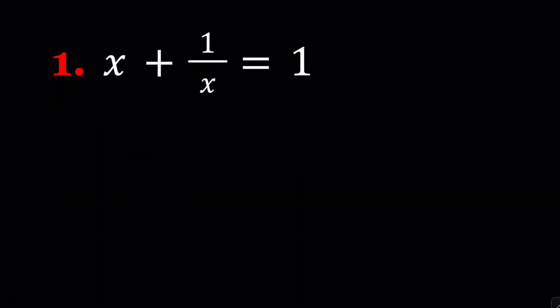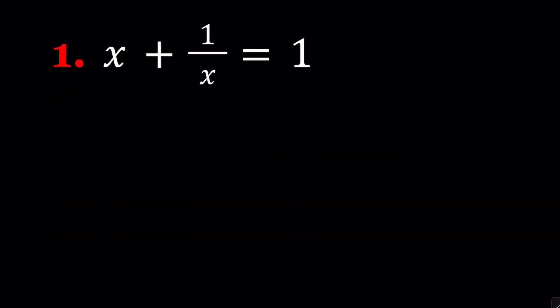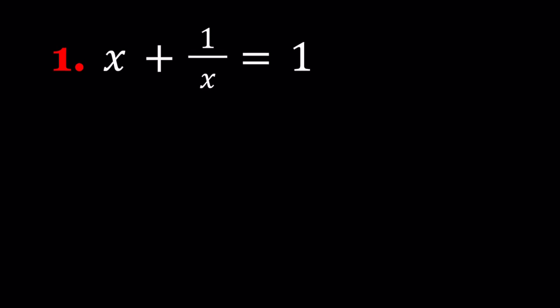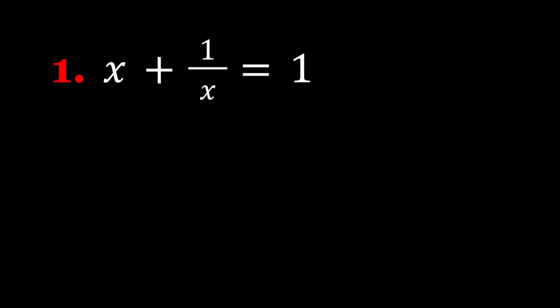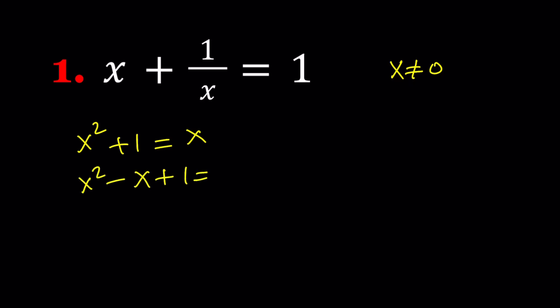First problem: we're going to be solving an equation x plus 1 over x equals 1. As you hopefully know, this can be turned into a quadratic equation. First of all, note that x is not supposed to equal 0. Under those conditions, we can multiply everything by x. That gives us x squared plus 1 equals x, and putting everything on the same side gives us x squared minus x plus 1 equals 0.